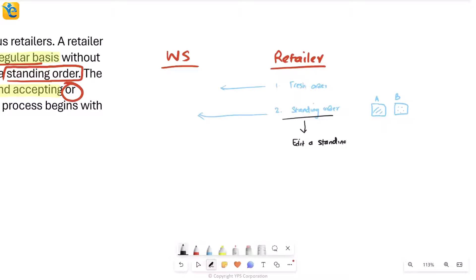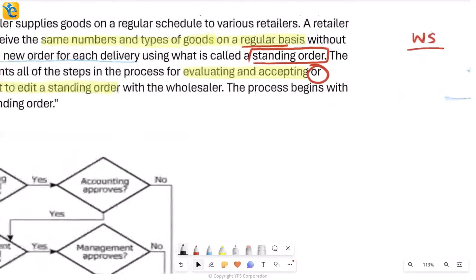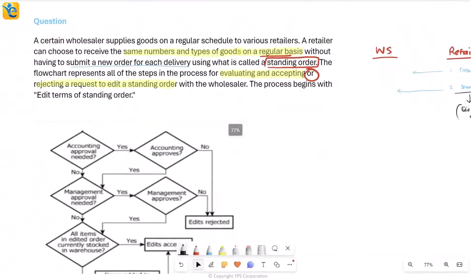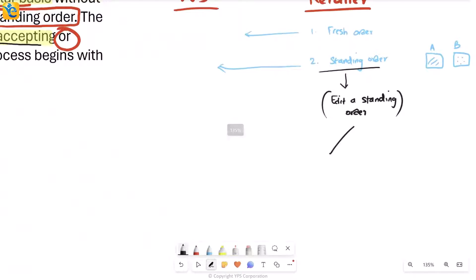There is a retailer who had earlier placed some standing order but now wants to edit it. So what happens in such a case? How does the wholesaler evaluate it and either accept this edit request or reject it? There are only two results—evaluate and accept, or evaluate and then finally reject. Obviously evaluation will happen before the wholesaler decides.